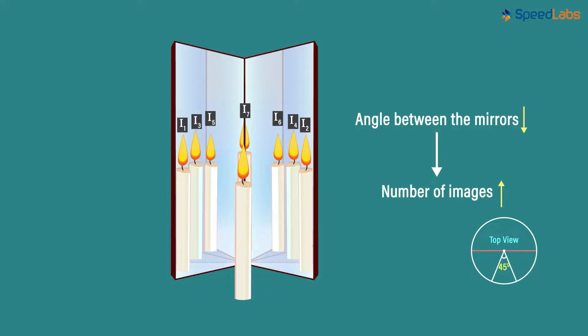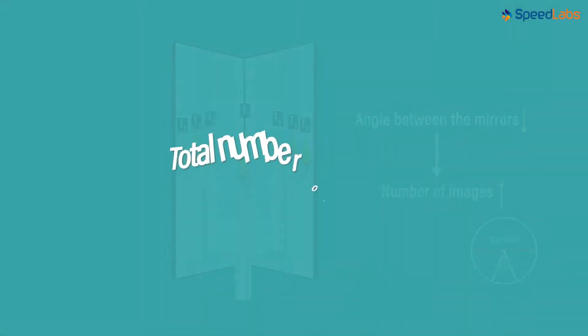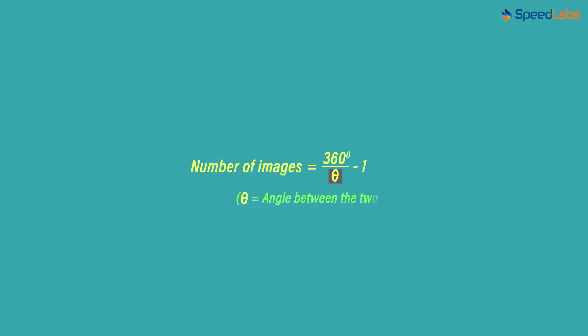Now you must be wondering if there is a way to find the number of images formed. Given an angle between the mirrors, is there a way in which I can find the number of images formed? Yes, there is a pretty neat formula which tells us that. The formula goes something like this. The number of images is equal to 360 degrees divided by theta minus 1, where theta is the angle between the two mirrors. This formula tells us the number of images formed.